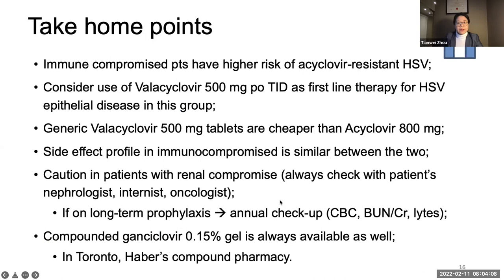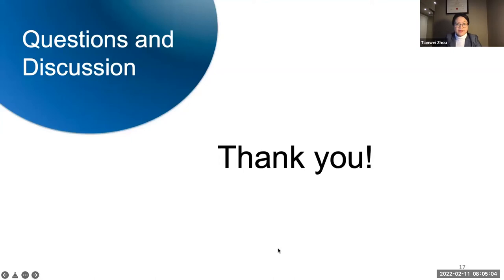In summary, here are a few take-home points. Immunocompromised patients have higher risk of acyclovir-resistant HSV. Consider the use of valacyclovir 500 TID dosing as the first-line treatment for HSV keratitis. Generic valacyclovir tablets are cheaper than acyclovir 800mg tablets, and the side effect profiles in immunocompromised patients are very similar between the two. We do need to be careful in patients who have renal problems — it's a good idea to put them on annual blood work if on long-term prophylaxis. Compounded ganciclovir 0.15% gel is available at compounding pharmacies — in Toronto, you can find it at Haber's Compounding Pharmacy. Thanks for your patience, and we're ready for questions.